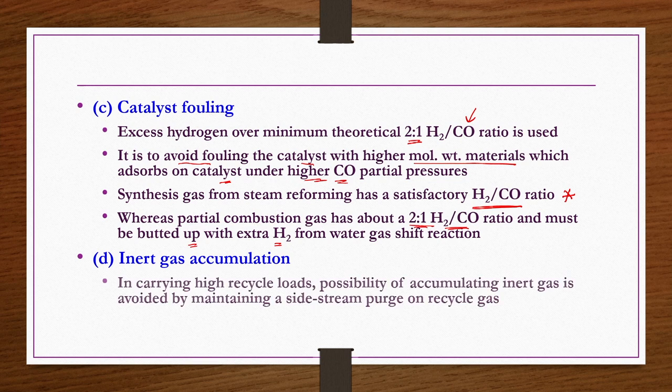Synthesis gas from steam reforming has a satisfactory H2 to CO ratio. Partial combustion gas has about 2:1 H2 to CO ratio and must be supplemented with extra H2 from the water gas shift reaction, otherwise side reactions and catalyst fouling may take place. For inert gas accumulation, this is avoided by maintaining a side stream purge on the recycled gas as discussed in the flowchart.